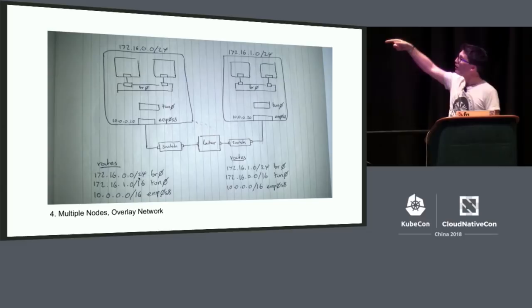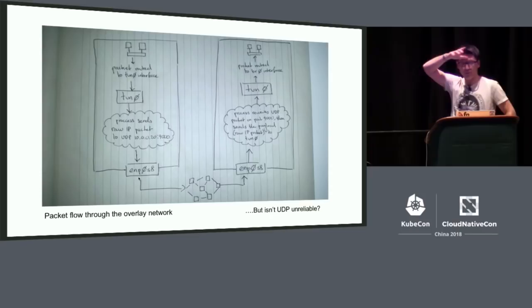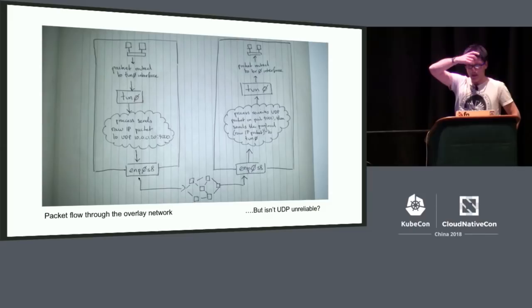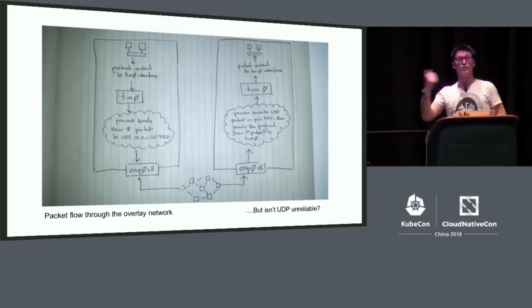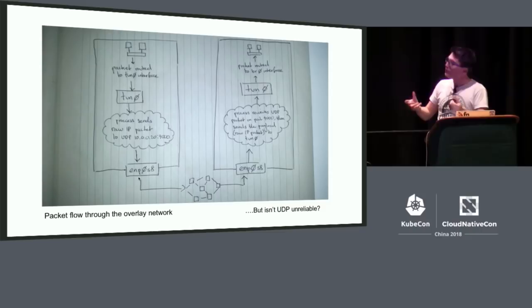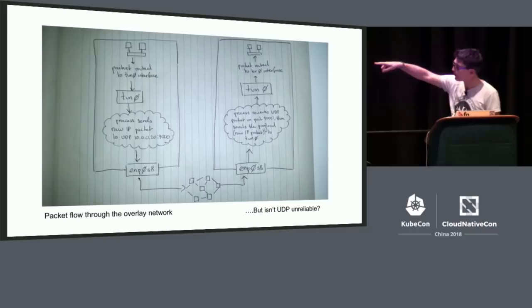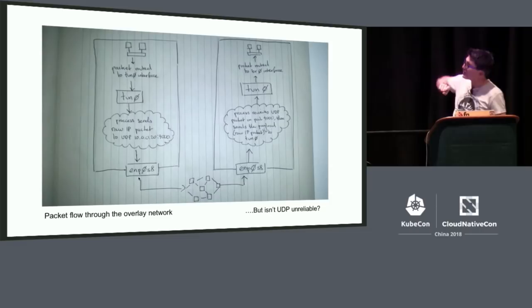Let's drill in and look at how a packet makes it from a container in the top left all the way to a container in the top right. The packet comes out of the container, goes onto the bridge, comes out of the bridge, and the kernel routes it to the TUN device. The process behind that knows — because it can see the IP address of the raw IP packet — which node to send it to, looking up in a database like etcd. It wraps it in a UDP packet and sends it to the other node on port 9000. It goes out ETH0, through whatever network is in between, comes back in ETH0 on the right-hand node. A process listening on port 9000 gets that, unwraps it, gets the raw IP packet, sends it back into the TUN device, and the kernel routes it up into the bridge to its destination.